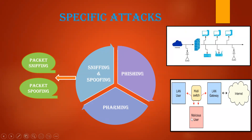Here you have a malicious user who is observing the data traveling from the LAN user to the LAN gateway through the internet. So the data transferred from the internet to the LAN user, or from the LAN user to the internet, is completely spoofed by the malicious user.